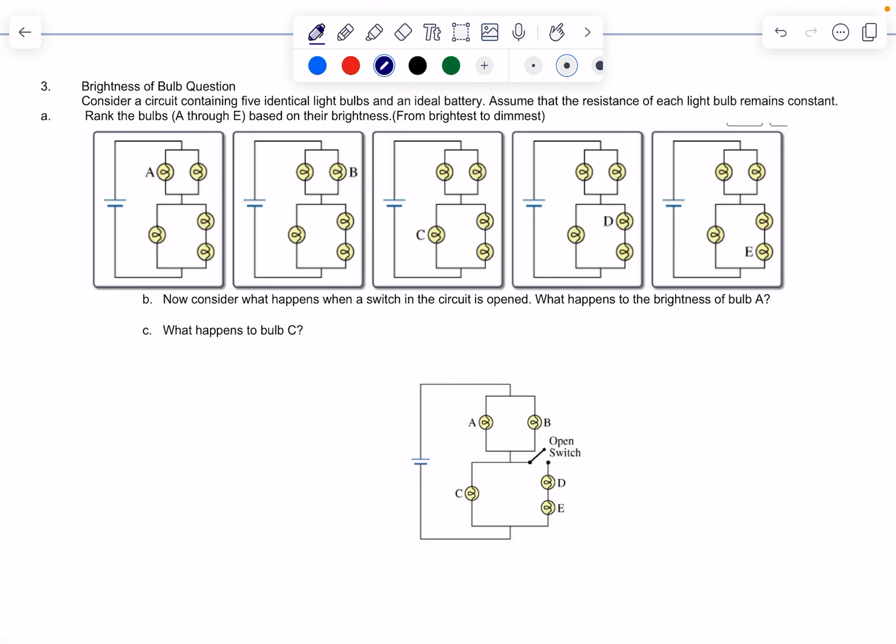This light bulb problem: we're trying to rank them in order from brightest to dimmest. Now we've got parallel circuits and it's kind of a mess, right? So which is going to be the brightest? Think the current is passing through here and then it's going to split, but it's going to split evenly because they're all identical light bulbs.